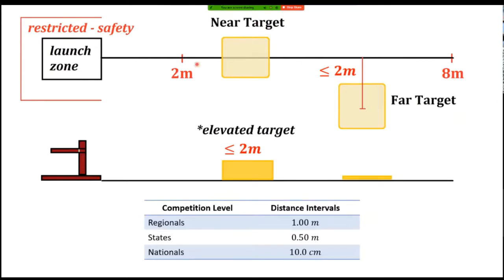What's special about these two targets is that the near target, if we look at it in the side view, can be elevated up to two meters. The far target will remain flat on the ground, but it can be moved up to two meters away from the center line, so you'll have to aim it sideways and shoot to the side. It's not going to be at a predefined location — it will be at a certain point between two and eight meters away from the launch zone.